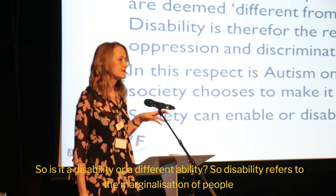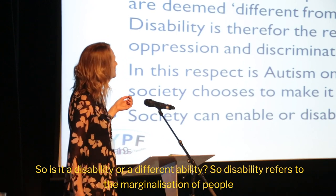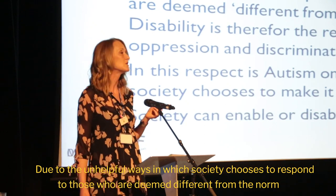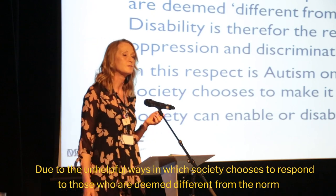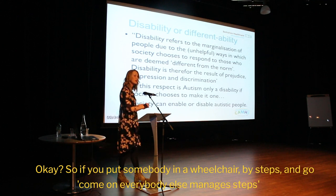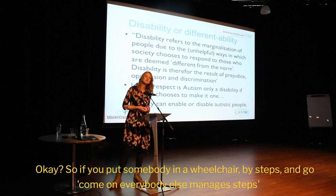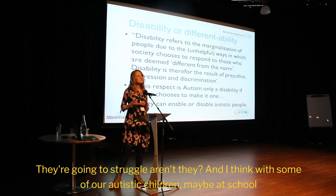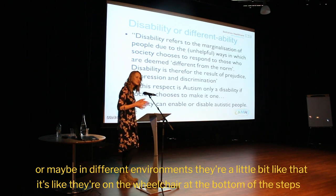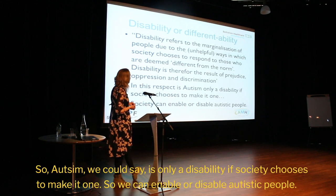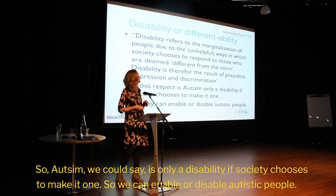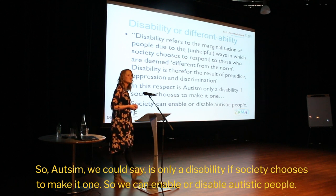Is it a disability or a different ability? Disability refers to the marginalisation of people due to the unhelpful ways in which society chooses to respond to those deemed different from the norm. If you put somebody in a wheelchair by steps and say everyone else manages steps, they're going to struggle. I think with some of our Autistic children — maybe at school or in different environments — they're a little bit like that, at the bottom of the steps. Autism is only a disability if society chooses to make it one. We can enable or we can disable Autistic people.